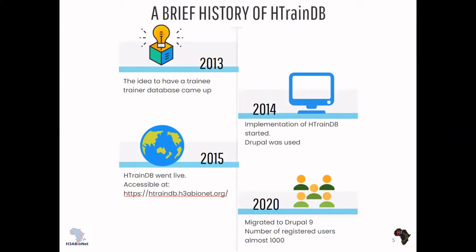So how did H3DB come about? In 2013, the idea came up to have a trainee-trainer database to track how trainees following various training had their careers evolving over time. There were various brainstorming sessions during H3Africa meetings, discussions between various stakeholders, and then a design was created. Implementation of H3DB began in 2014.